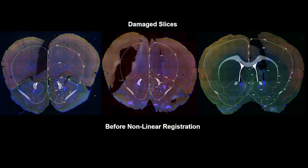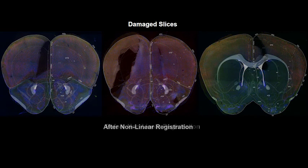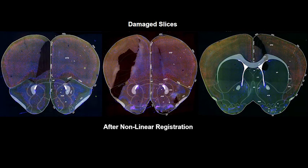We now show the results of our nonlinear registration on a few microscopic slices. Here, we show three coronal mouse brain slices with tissue tears overlapped with their corresponding annotated atlas contour images in white before registration. Using our registration technique, we achieve accurate alignment between the two images.